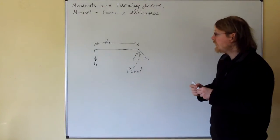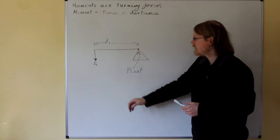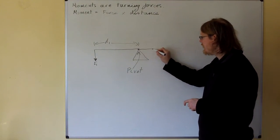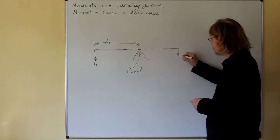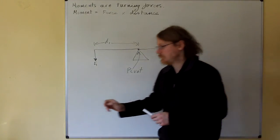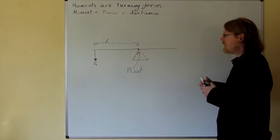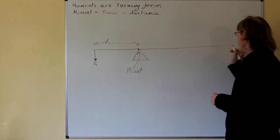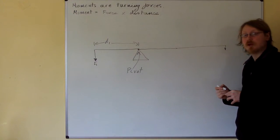Now, the way that we could balance this turning force, this is an anti-clockwise turning force, the way we could balance it would be if we had a lever of the same length and a force of the same size. That would be one way of balancing this turning moment. Another way we could do it would be to have a lever that was twice as long and a force that was only half as big. That would work as well.